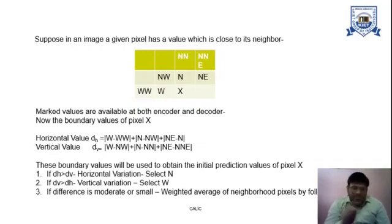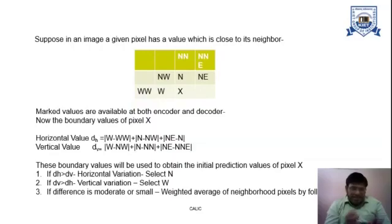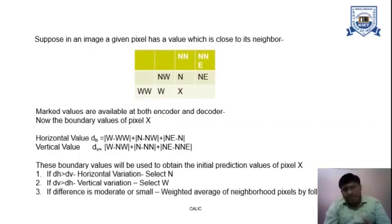On the basis of these marked pixels, we calculate the horizontal value DH and the vertical value DV. The formula for DH is the absolute value of (W minus WW) plus (N minus NW) plus (NE minus N), and we take the summation of that. This is for the horizontal values because we are considering the neighbours of X; that is why we did not consider N minus NE, as it is not a direct neighbour of X, but we will consider those pixels when we calculate the vertical values.